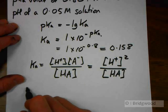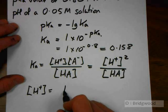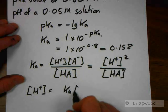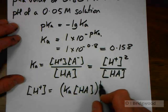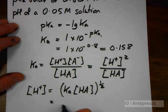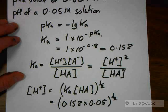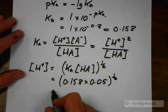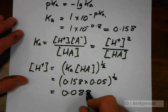Rearranging, we can have concentration of hydrogen ions equal to Ka times concentration of HA, square root of that, or you can put it to the power half. So that's going to be equal to 0.158 times 0.05 to the power half, which gives me a value of 0.0888.